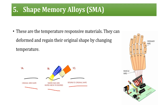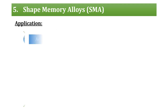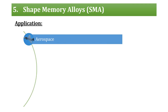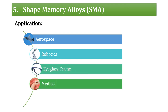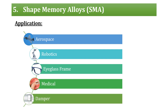Shape memory alloys regain their shape when heated above 90 degrees. This type of alloy is widely used in robotic hand applications and in aerospace industries — for example, in fighter jets where high temperature develops at speeds above sonic speed, the shape memory alloy regains its original shape. It is also used in eyeglass frames, medical industries including endodontics and orthodontics, and in damper applications.